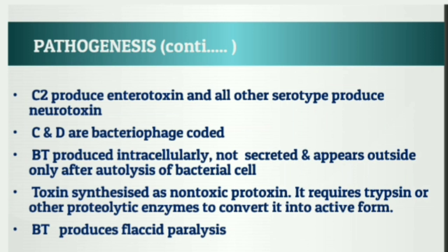Except serotype C2, all other serotypes produce neurotoxin, whereas C2 produces enterotoxin. BT types C and D are bacteriophage-coded. BT is produced intracellularly but not secreted — it appears outside only after autolysis of the bacterial cell. This toxin is synthesized initially as a non-toxic protoxin, which requires trypsin or other proteolytic enzymes to convert it into active form. This botulinum toxin is responsible for flaccid paralysis.